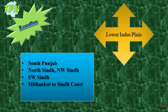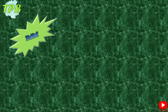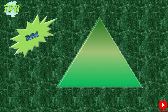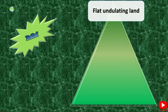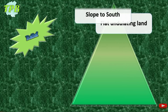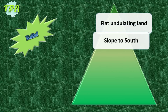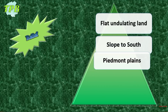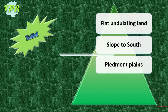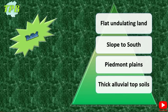The shading of upper and lower Indus Plains must be known for map labeling. The relief of the Lower Indus Plain is not very different from the Upper — there is flat undulating land. The slope of the Lower Indus Plain is towards the south. Piedmont plains are common and the soils are thick and alluvial.